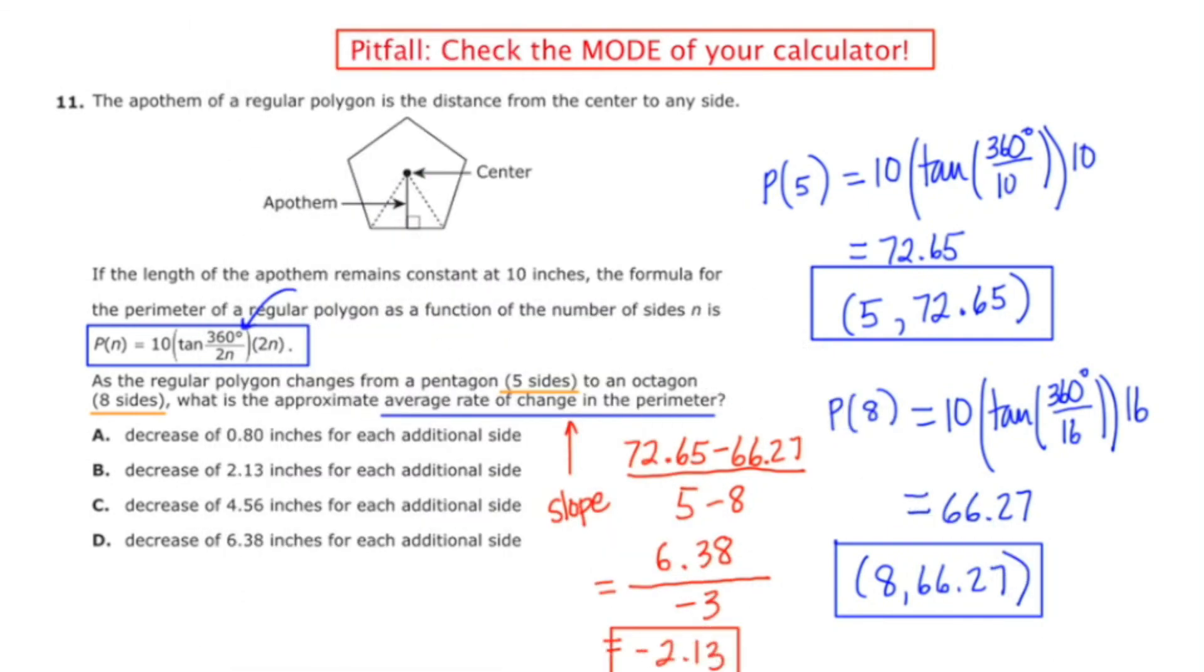Now you'll notice that none of the answers is negative, but they do start with the word decrease. So the negative slope would indicate a decrease in the overall perimeter. And if you look at choice B, it says a decrease of 2.13 inches for each additional side. So that's exactly what we got when we did the calculation. So I'm going to choose answer choice B.